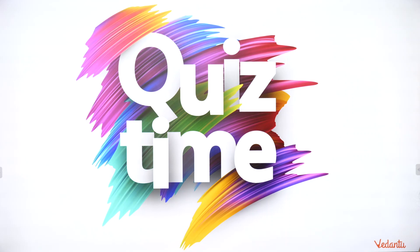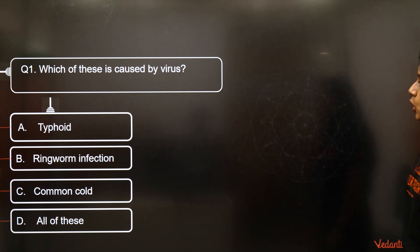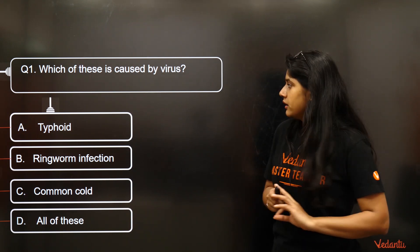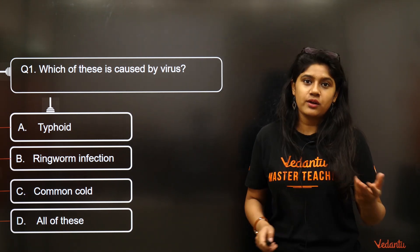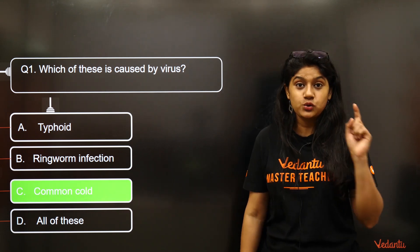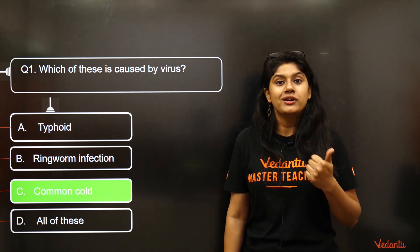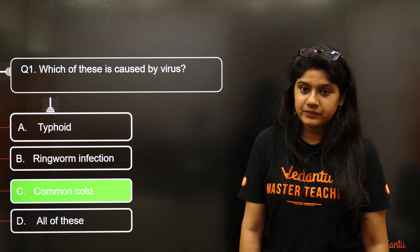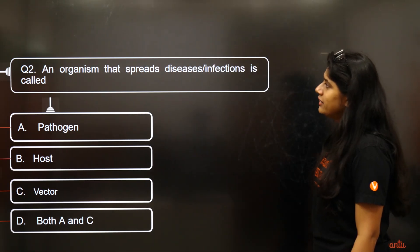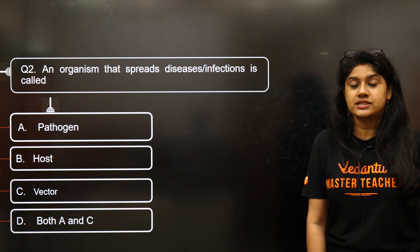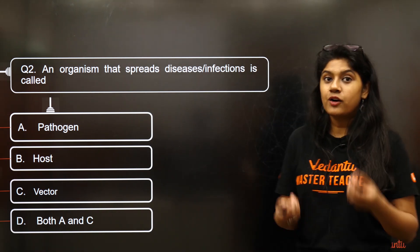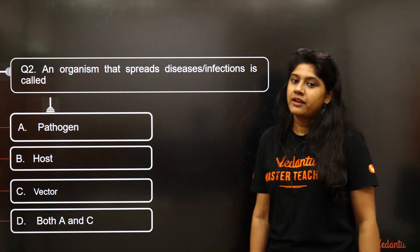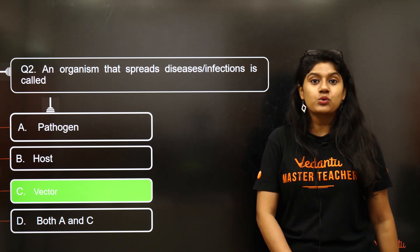Quiz time! Question 1: Which of these is caused by a virus — typhoid, ringworm, common cold, or all of these? The right answer is common cold. Common cold is caused by a virus, whereas typhoid is caused by bacteria and ringworm by fungi. Question 2: An organism that spreads disease infection is called what — pathogen, host, vector, or both B and C? The correct answer is option C: vector.